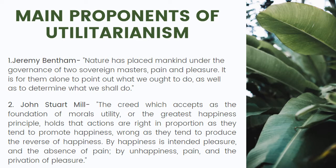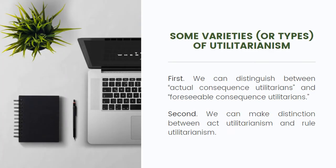Now let's talk about some varieties or types of utilitarianism. First, we can distinguish between actual consequence utilitarians and foreseeable consequence utilitarians. Second, we can make distinctions between act utilitarianism and rule utilitarianism.